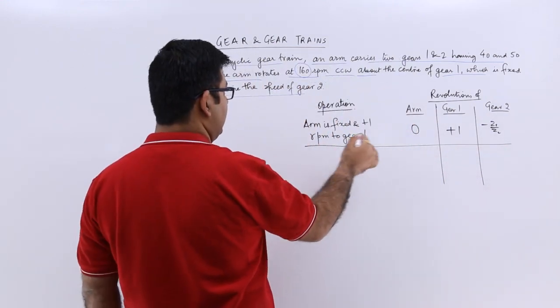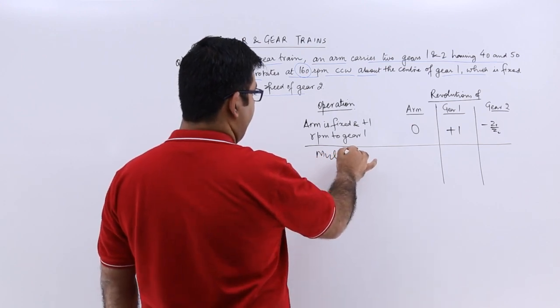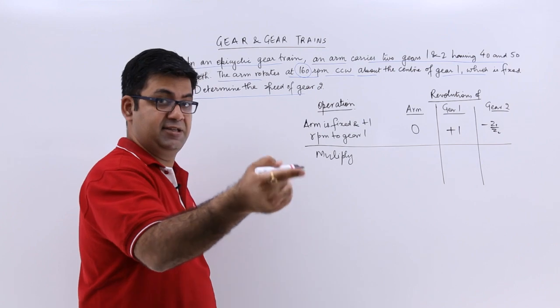We will multiply the entire thing by x, that is giving gear 1, x rpms.